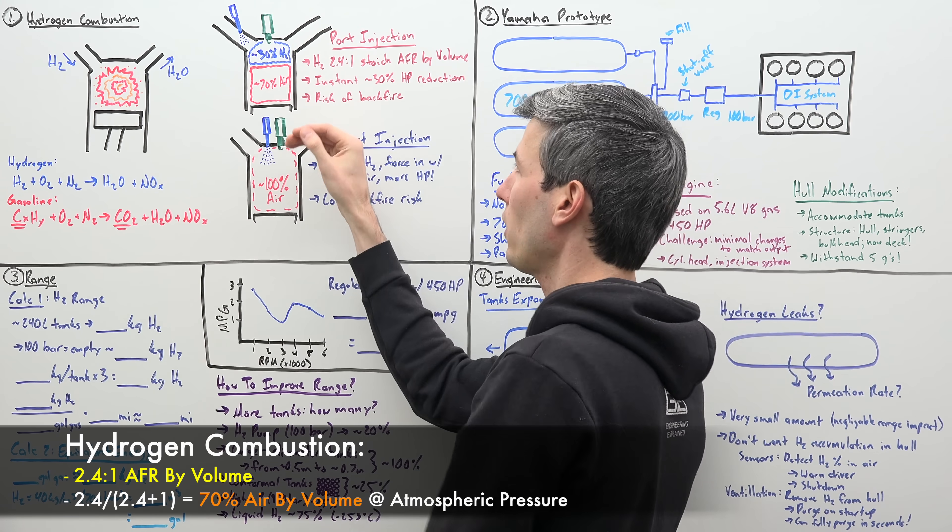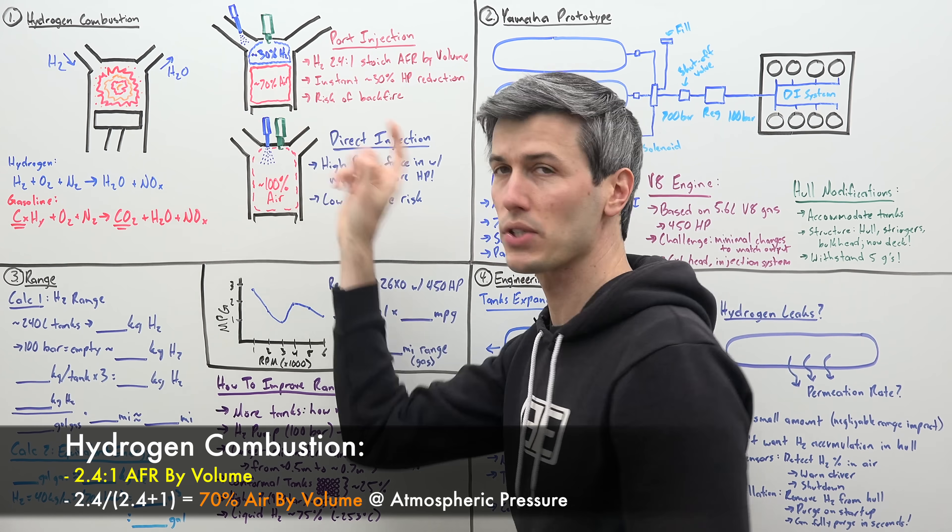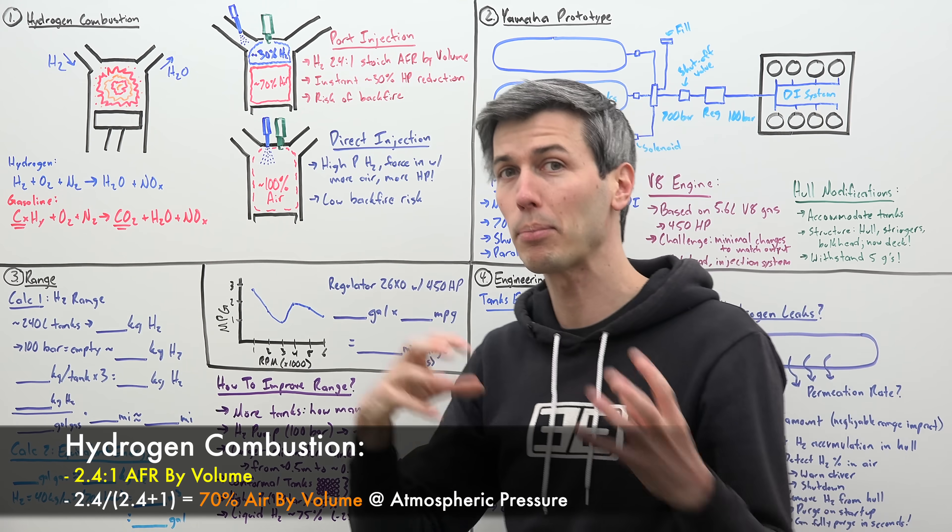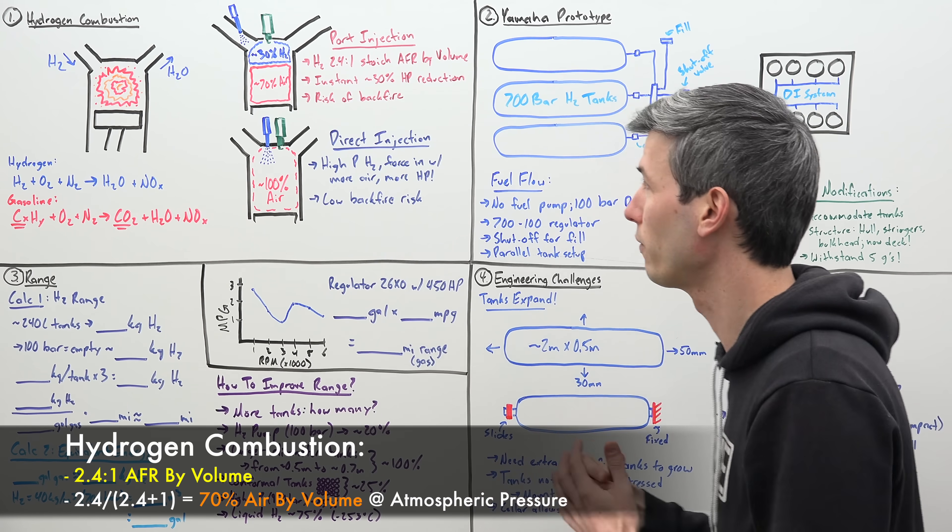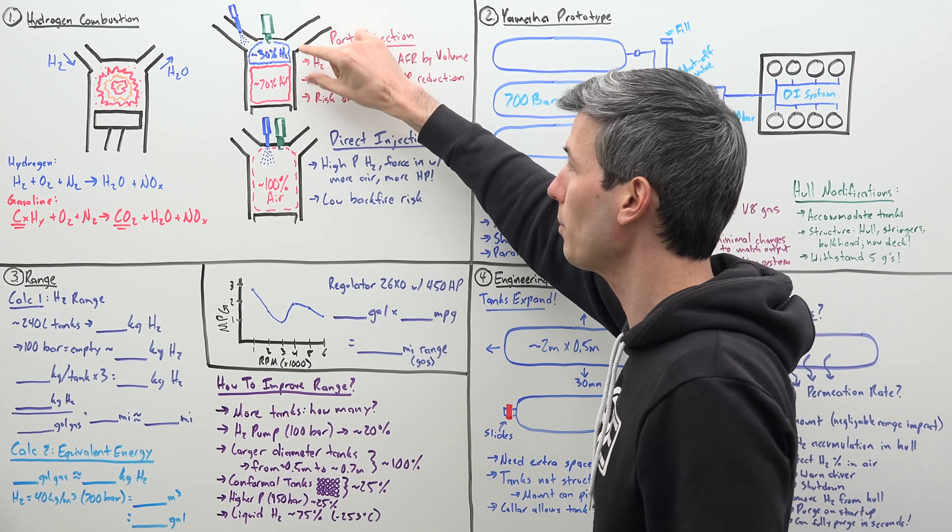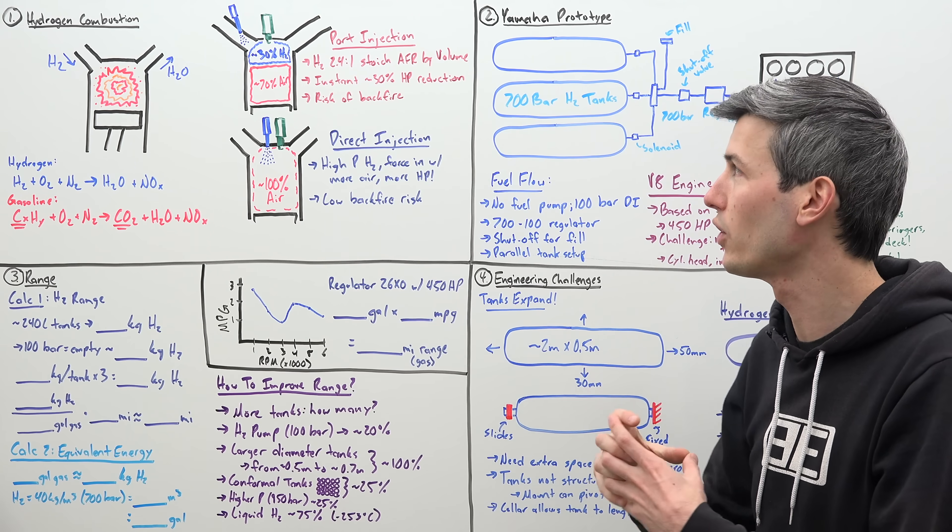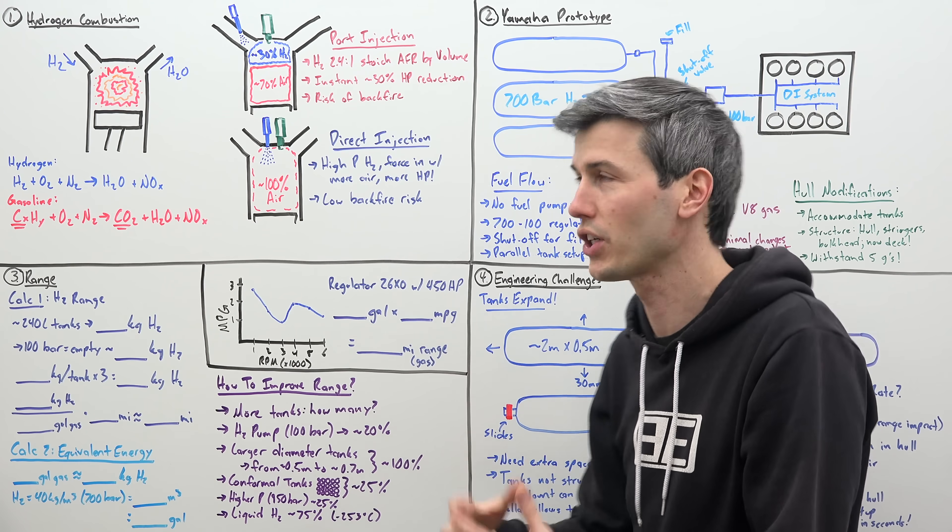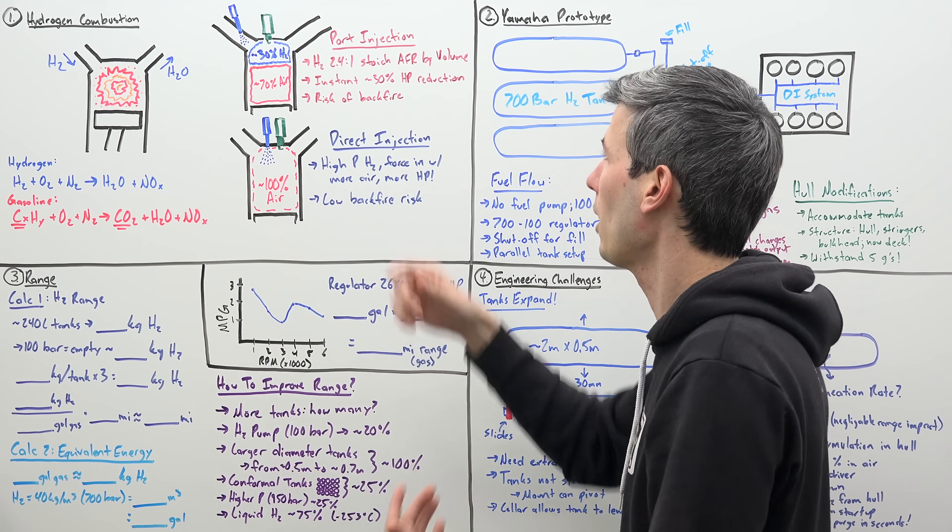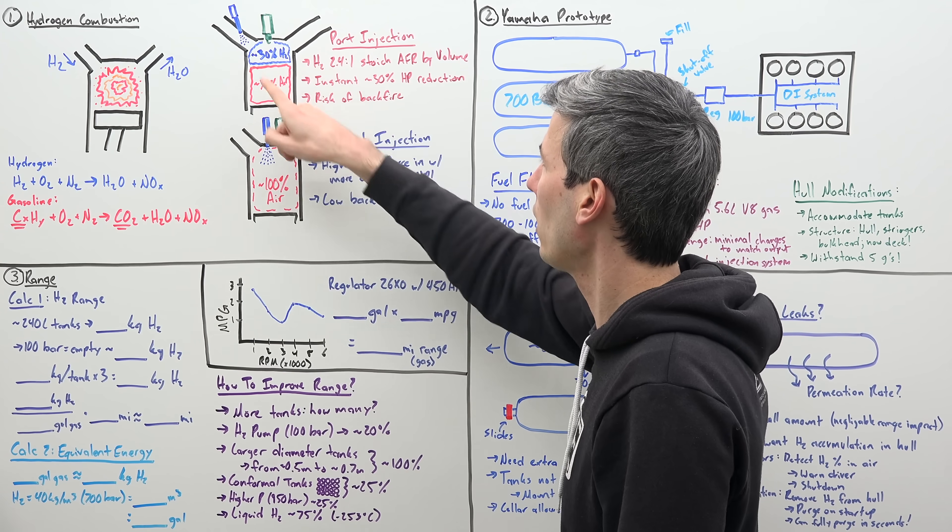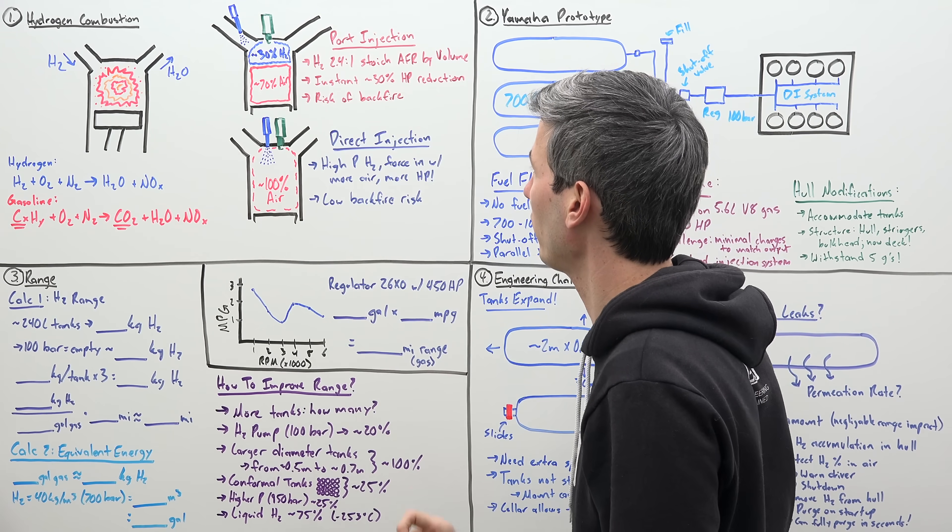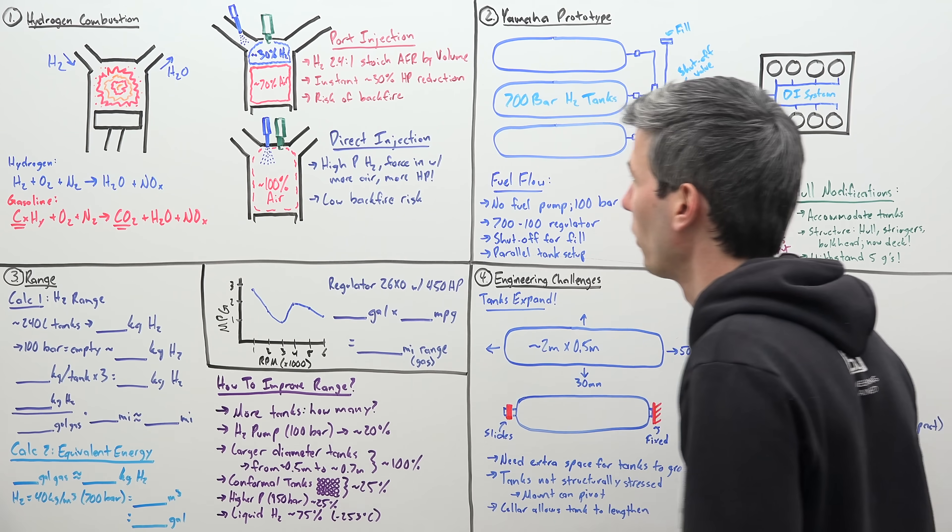Meaning once you pull in all that air, only about 70% of that space is actually going to be air and about 30% of that space is the hydrogen fuel. So if you reduce the amount of air that you have within the cylinder, well, you're reducing the amount of oxygen that you can then use to react with that hydrogen and make more power. So you're instantly taking a big power hit because you're limited on how much air you can pull in within that cylinder because hydrogen takes up so much space.